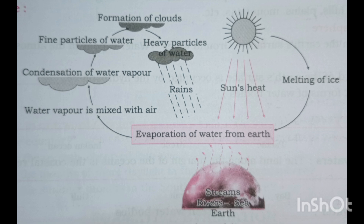Activity: draw a labeled diagram showing the water cycle. You have to draw a diagram here. The water cycle includes: evaporation of water from streams, rivers, the sea, and the earth's surface; water vapor mixing with air; then condensation of water vapor forming fine particles and clouds; heavy particles then fall as rain; and again evaporation occurs. This completes lesson number three. I hope you understand all the question answers. Thank you.